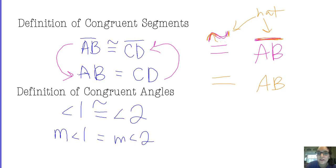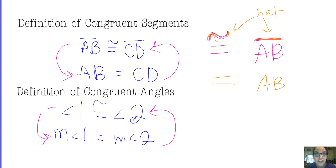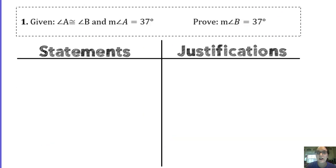When switching between angles being congruent and their measures being equal, or vice versa, that reason is the definition of congruent angles. If two angles are congruent, their measures are equal. If two angles' measures are equal, then they're congruent. That bidirectional relationship is what the definition of congruent angles states.